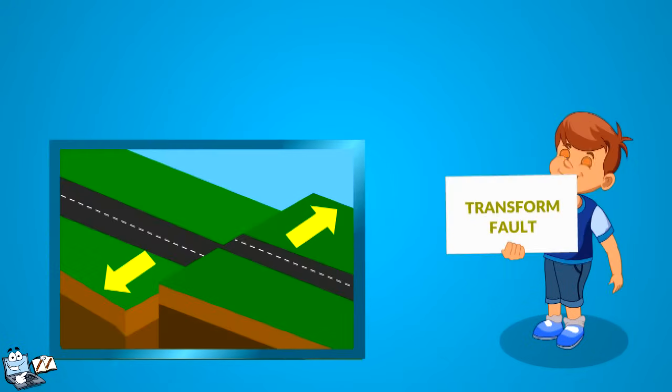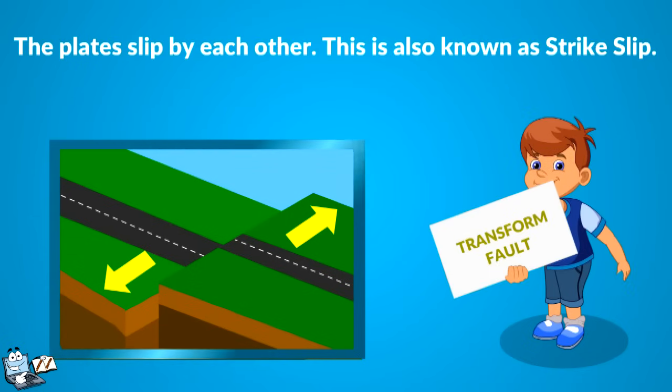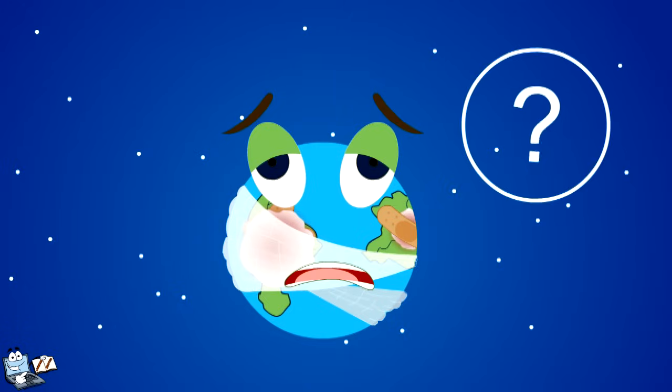Third is transform fault. In this, the plates slip by each other. This is also known as strike slip. Let's see how scientists study earthquakes.